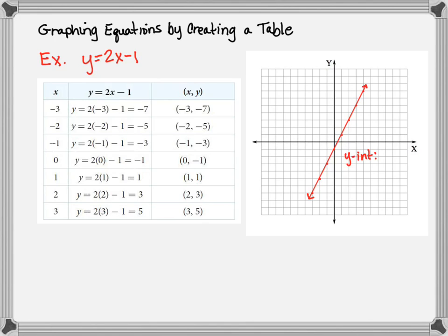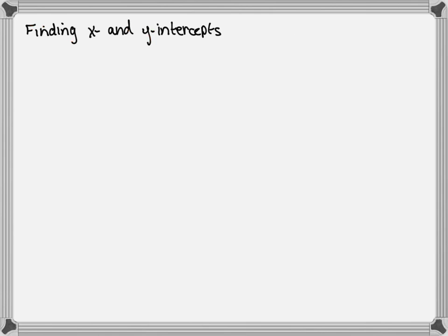We can also identify x and y intercepts from the graph. Here we can clearly see that the y-intercept is (0, −1) from the table or the graph, because this is where the line crosses the y-axis. We can find the x-intercept as well — it looks like it's at (1/2, 0).